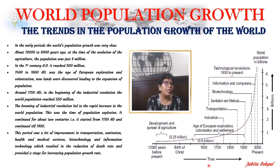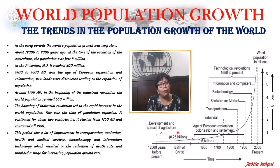As we see, about 12,000 to 8,000 years ago, man learned to grow crops and live in small settlements, generally around the river banks. At that time, the population was small and was roughly 8 million.